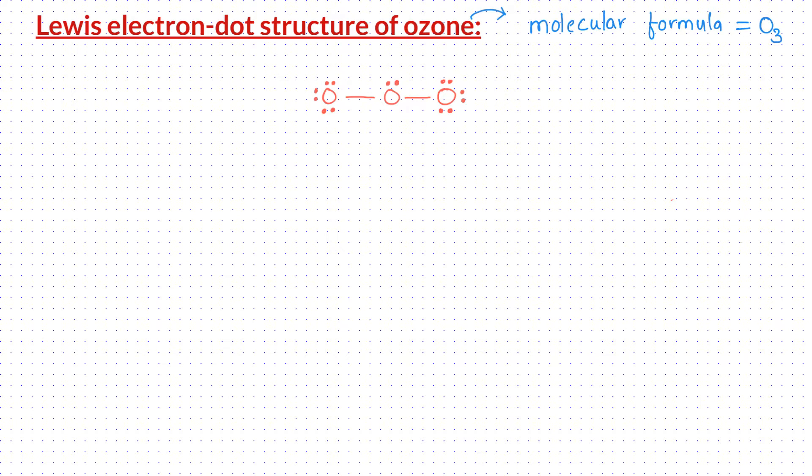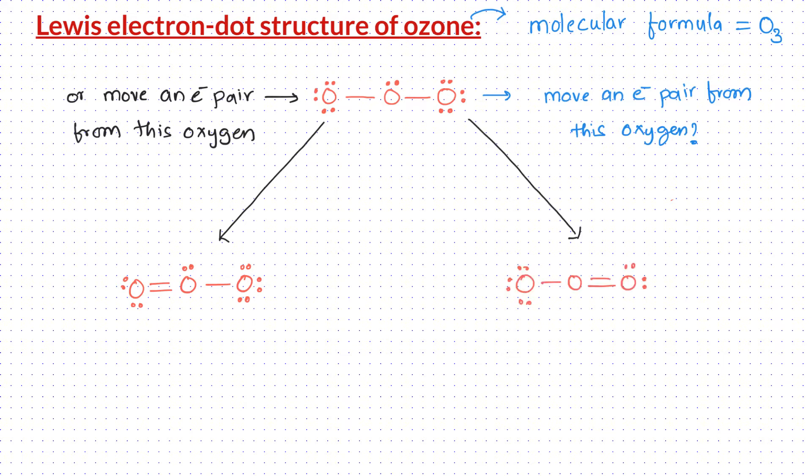Now the question is, there are 2 terminal oxygen atoms. From which oxygen do we need to transfer the electron pair from? If we transfer the electron pair from the oxygen on the left, we get the following structure, and if we transfer the electron pair from the oxygen on the right, we get the following structure.